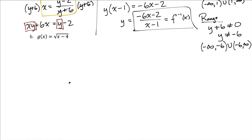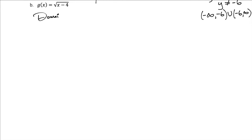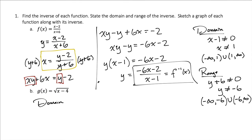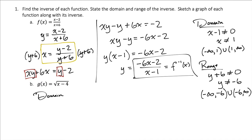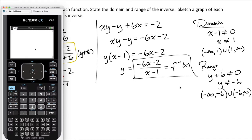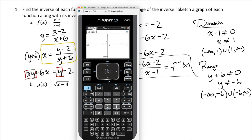For part b, this one's a little bit trickier. But first, we were supposed to sketch the graph of the function along with its inverse — let's go ahead and do that. This rational function, we're going to sketch it using our calculator because we don't know how to sketch it by hand yet. Let's go to our calculator, add a graph, and plug in the function: x minus 2, in parentheses, divided by x plus 6.